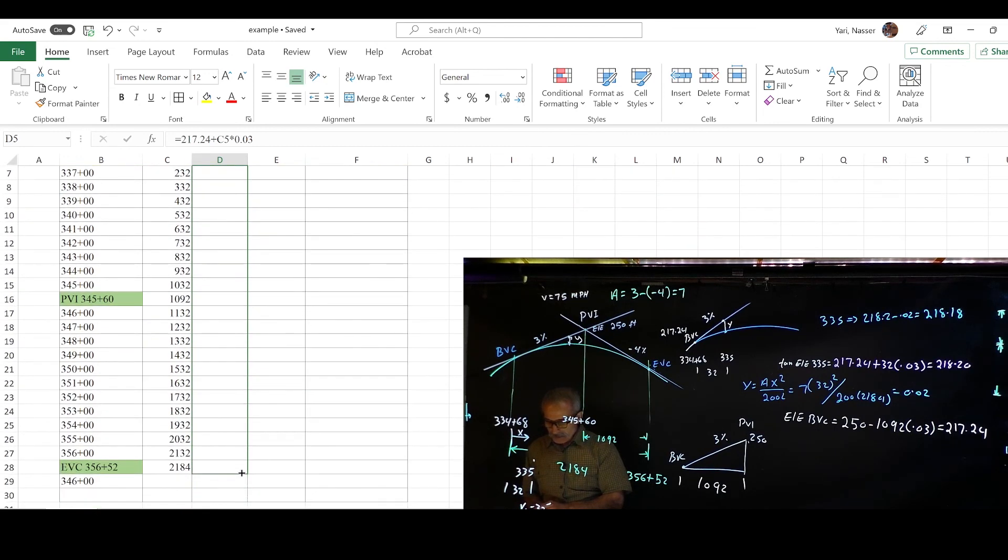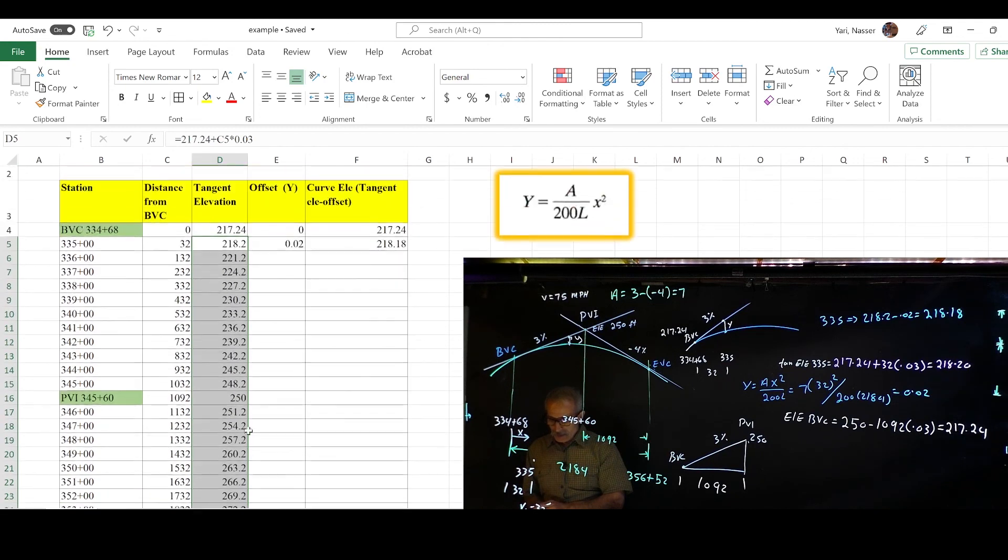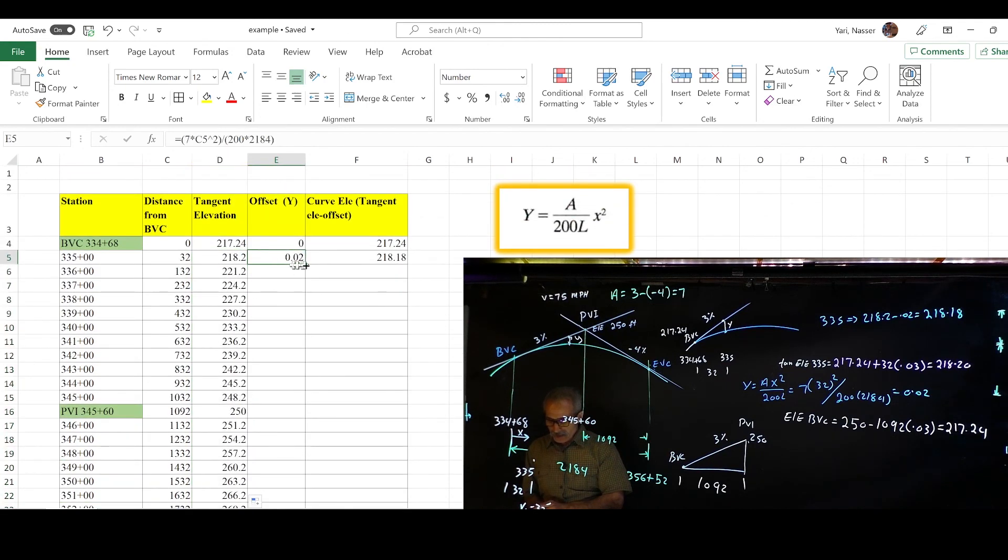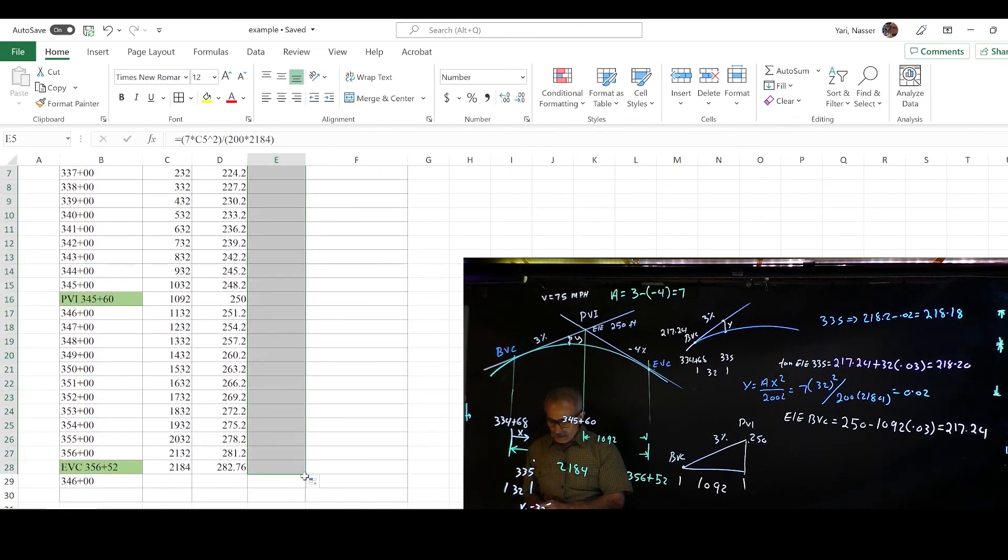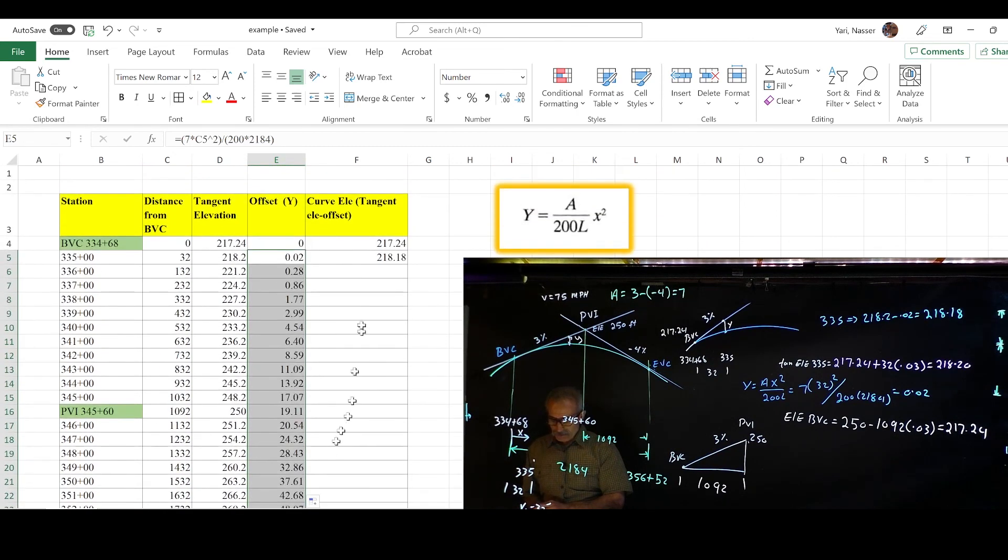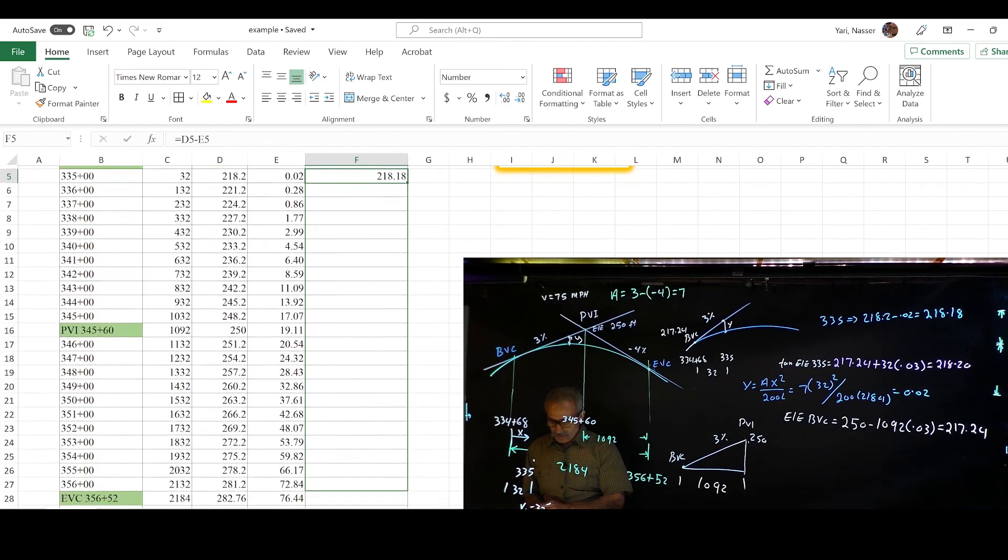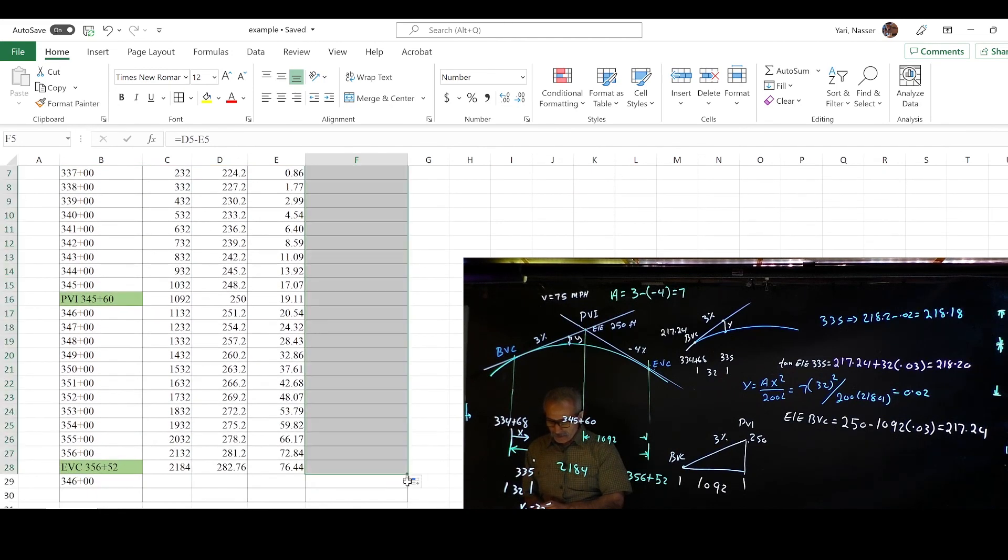Let it go, and then do the same thing with the tangent offset. Grab the corner, bring it all the way down. There they are, and we're going to click this one, and same thing. Bring it all the way to the bottom and let it go. And there it is.